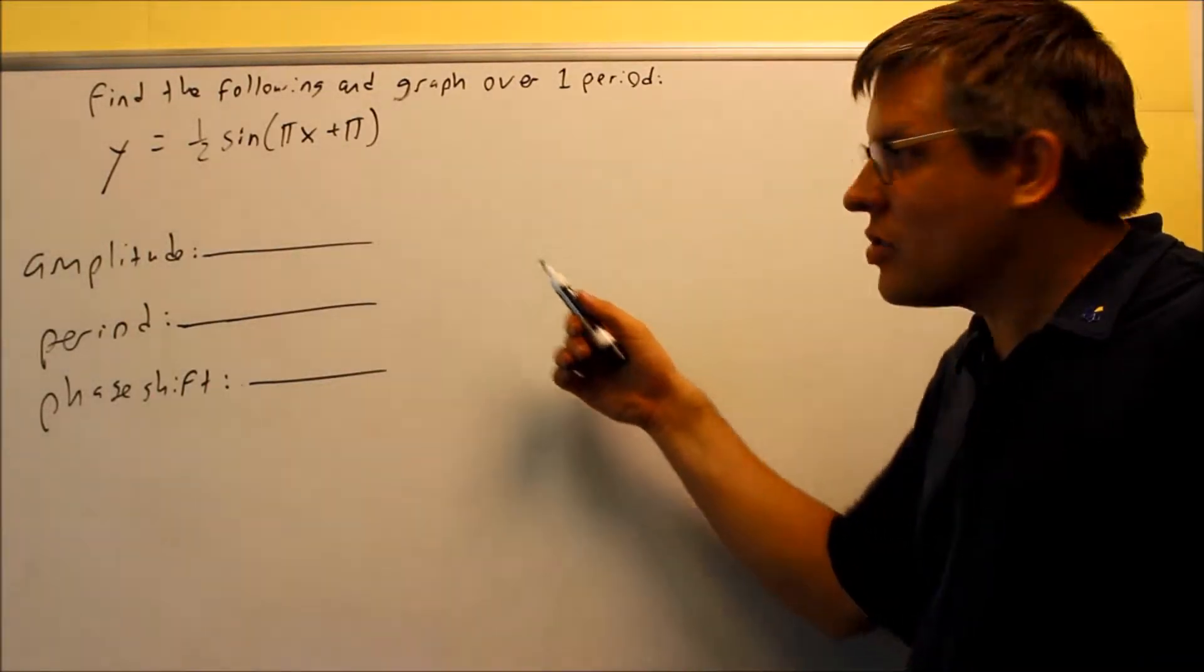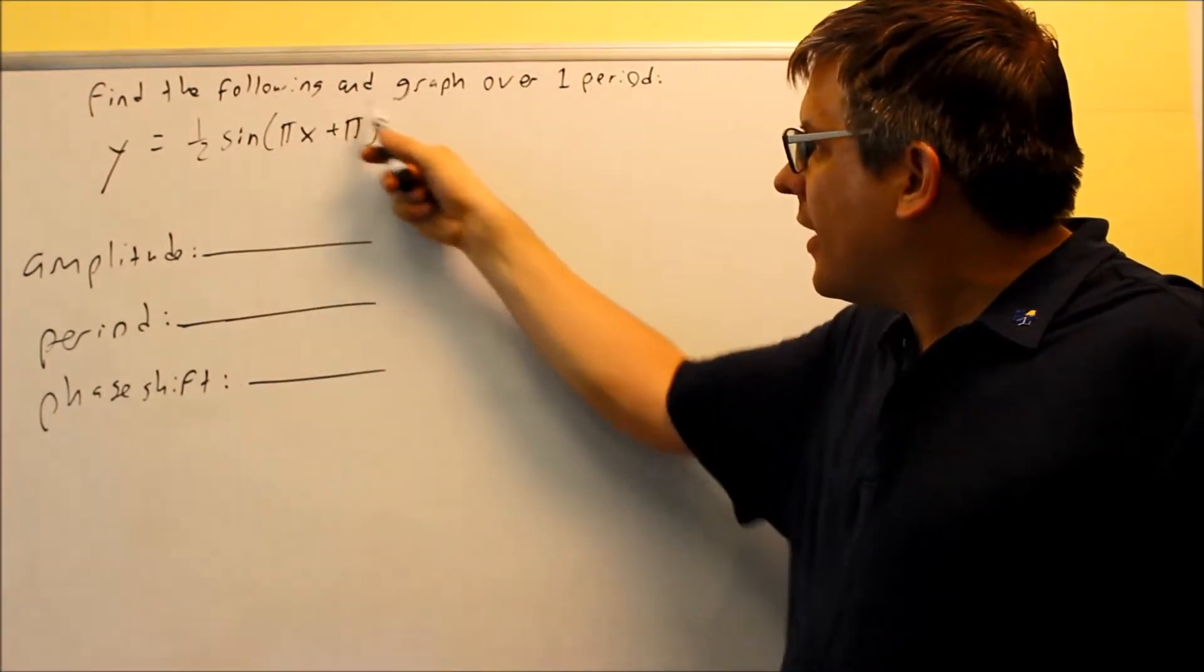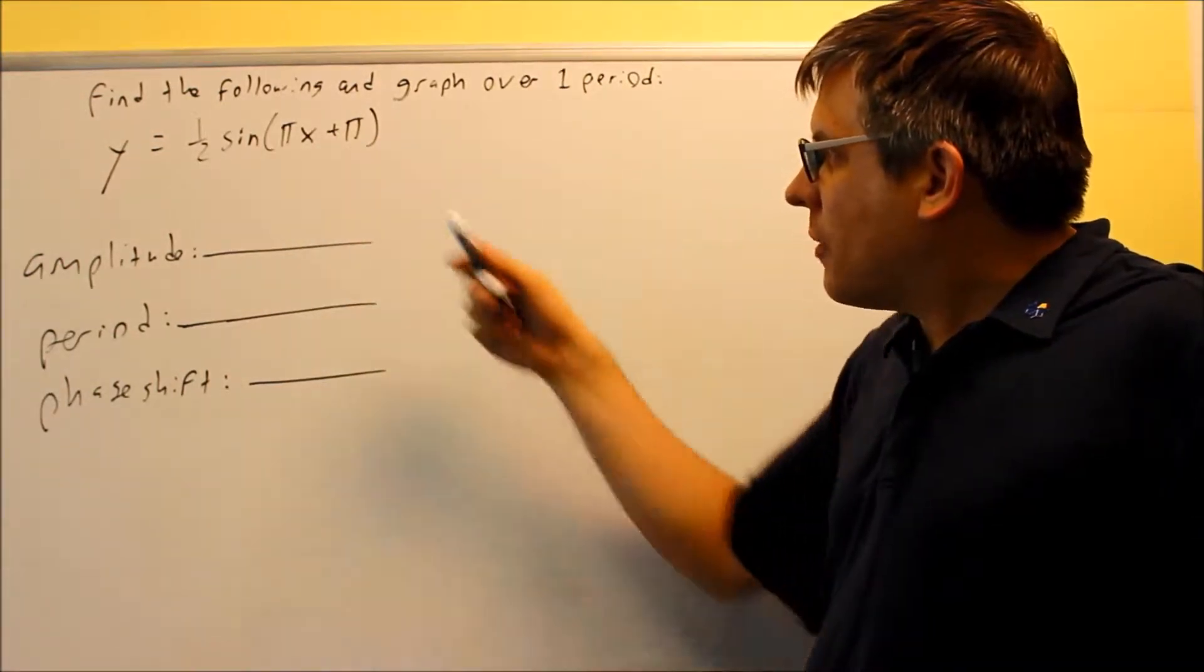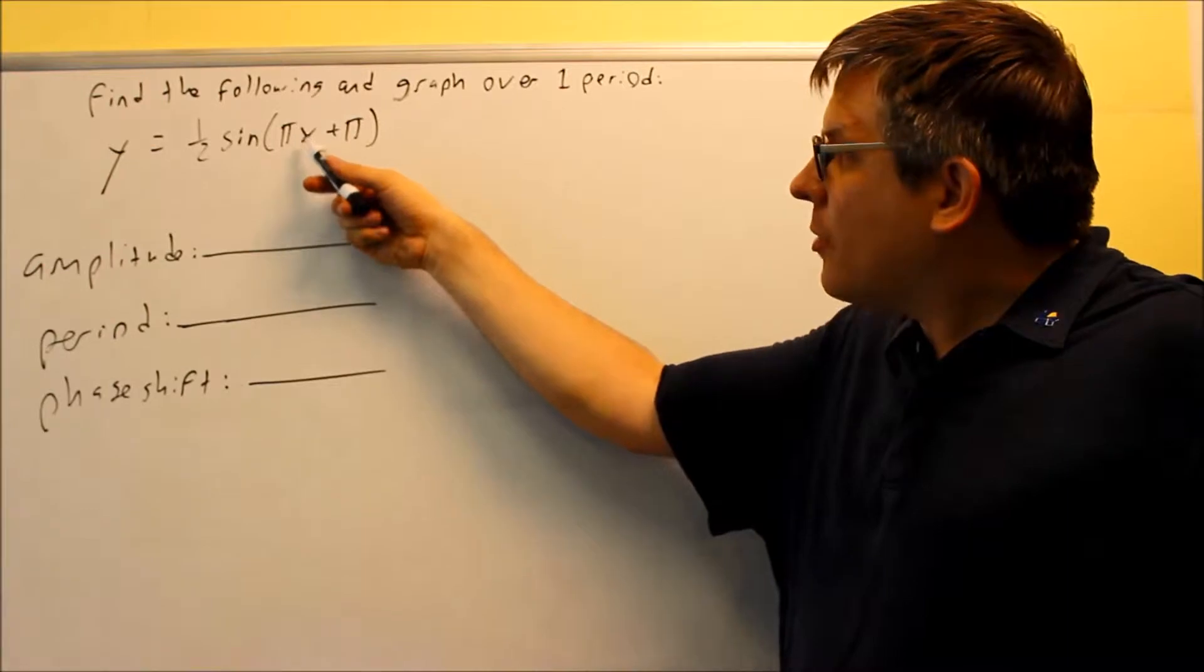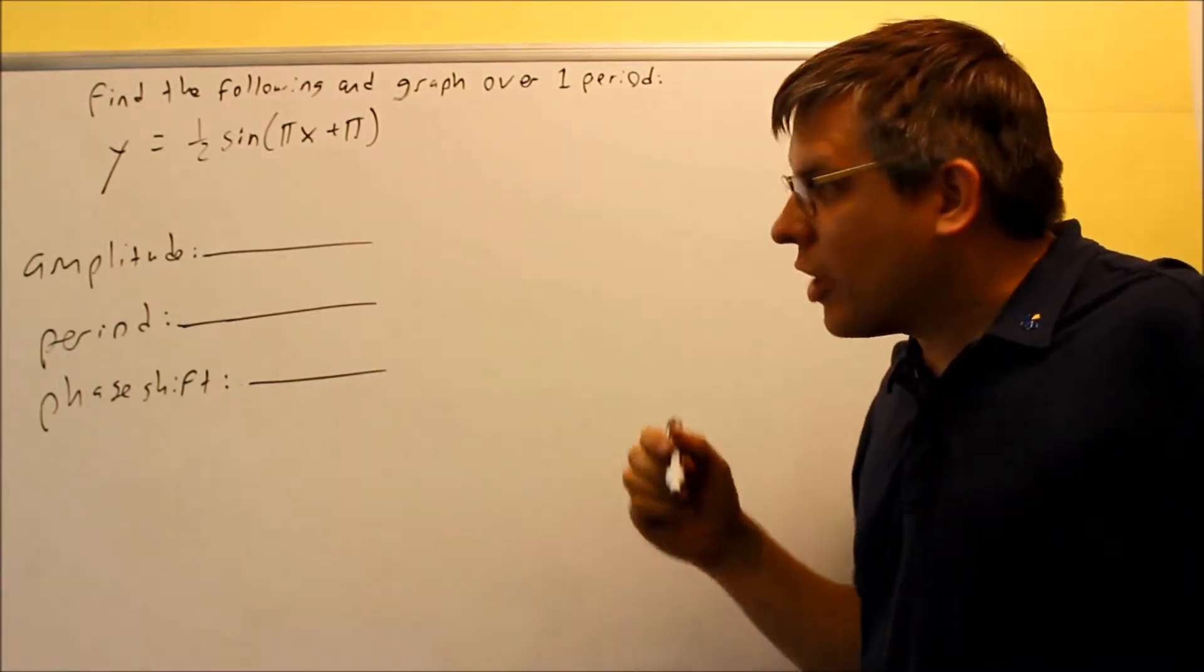And now we're going to look at a sine graph. This is another one that has a phase shift that's not zero because I've got a pi that comes after it. I also know my period will be something different than 2π because I've got a number in front of the x here. Let's go through and see what each of these are first before we do the graph.